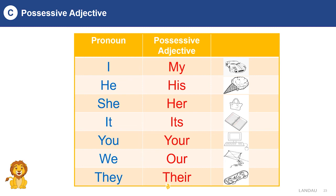I have a car — this is my car. He has an ice cream — this is his ice cream. She has a bag — this is her bag. It has a notebook — it's its notebook. You have a computer — it's your computer. We have a kite — our kite. They have a boat — and this is their boat.